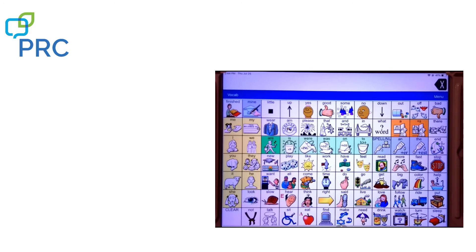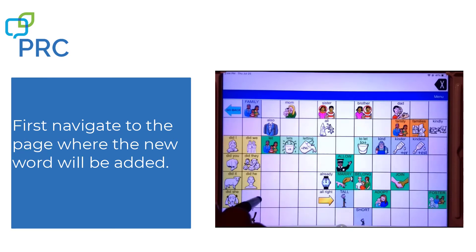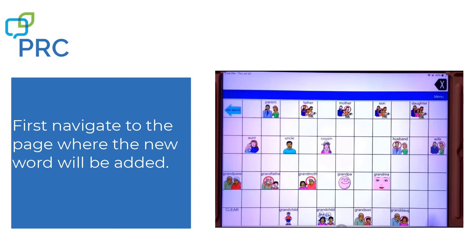Let's talk about adding a photo. I want to add a photo of my dog because my dog is part of the family, so I'm going to associate dog with family. I'm going to press the picture of the family and then the blue box that says family. And this is where I want to put the picture of my dog.